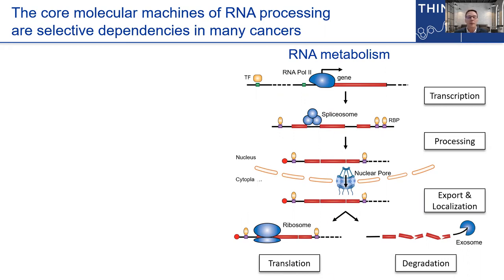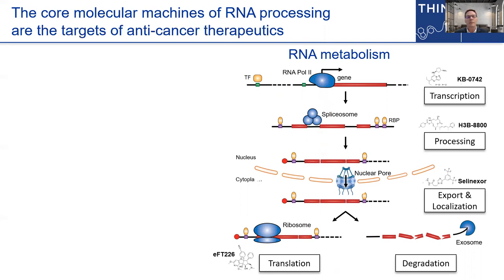Now, certainly targeting regulators of transcriptional programs like ER and other transcription factors — that's not a new approach in cancer therapeutics. But what I'm referring to here is the surprising realization that many cancers harbor unique dependencies on the more global actors of RNA metabolism, from core transcriptional CDKs to the spliceosome to the nuclear export complex and beyond. And indeed, there's an entirely new generation of therapeutics that target these global processes and are showing remarkably selective activity in preclinical models of cancer — some are even making their way to the cancer clinic.